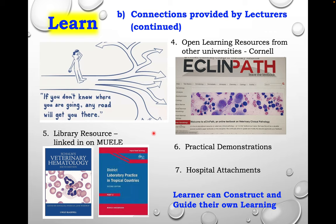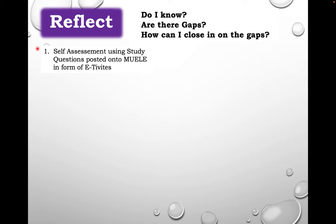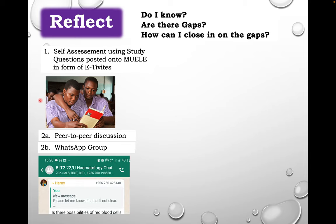The learning doesn't occur without guidelines and deadlines. We need to provide conditions that will ensure learning occurs in a specific time and period. How will the learner know they have learnt? How will they know if there are any gaps? How will they know how to close the gaps they've identified? This occurs during reflection — we allow students a period of time to reflect. There is self-assessment using study questions or quizzes on Moodle, and we encourage peer-to-peer discussion among learners. We even have a subgroup where they can post questions relating to the learning.